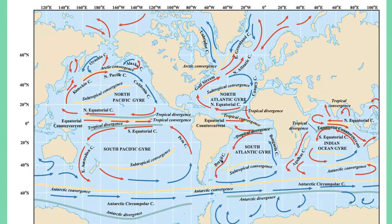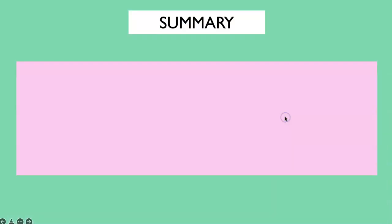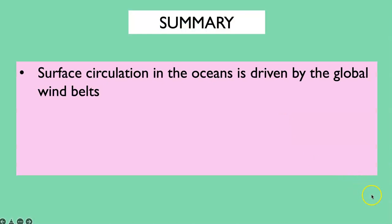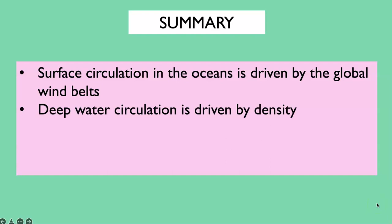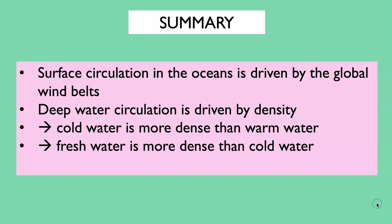Those are the two types of ocean circulation. As a summary: surface circulation is driven by global wind belts, and deep water circulation is driven by density. Cold water is more dense than warm water, and salt water is more dense than fresh water.